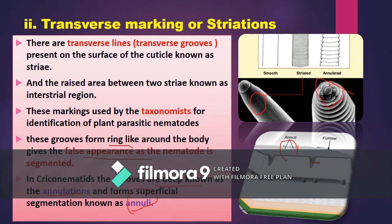Transverse markings are transverse lines on the surface of the nematode cuticle, also known as transverse grooves. They contain two regions: ridges and furrows. The furrow areas are known as stria, and the raised area in between the stria is known as the annex.